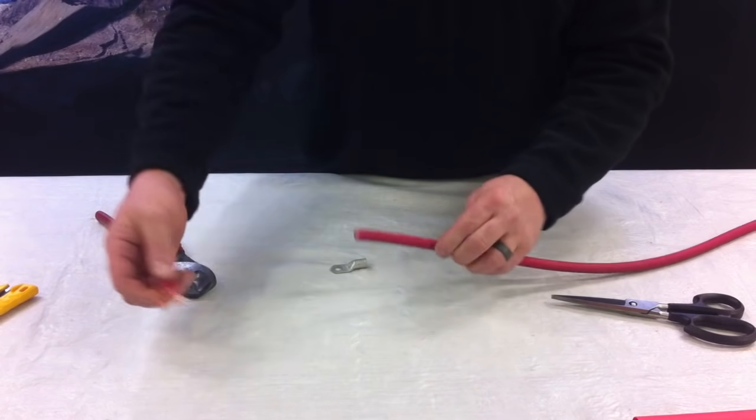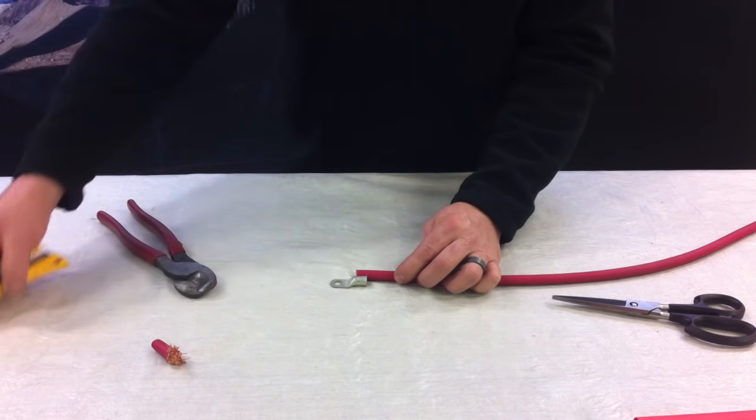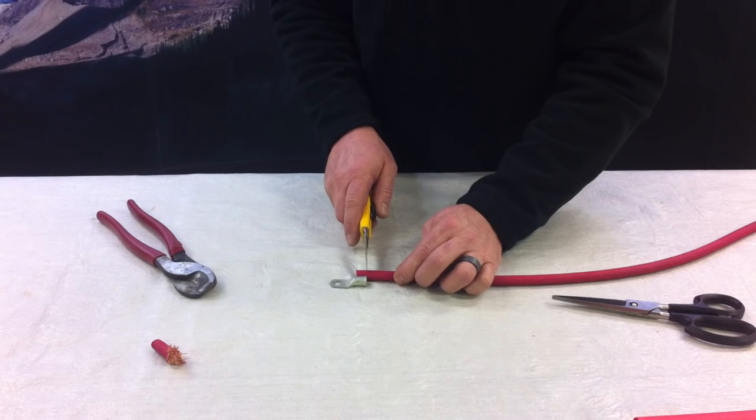So we've gone ahead, we've made the nice cut on our cable, and what I like to do is to measure out where I remove my insulation. So I bring it flush to where the cable is going to stop on the lug and I make a mark.